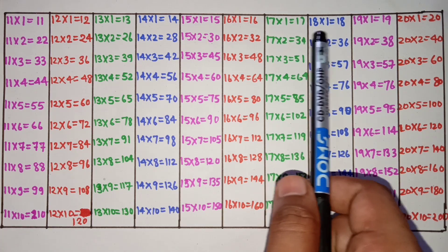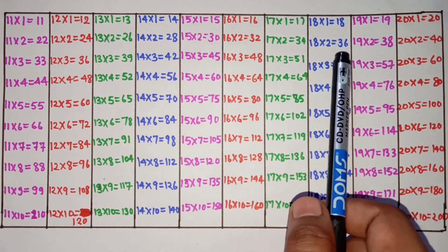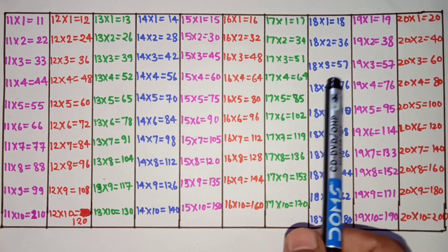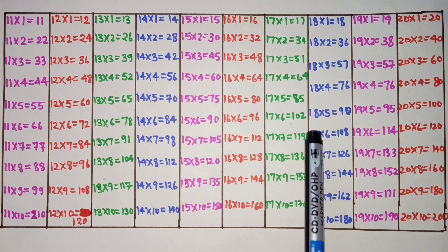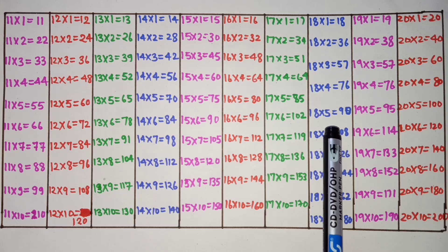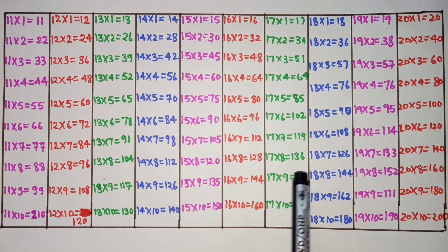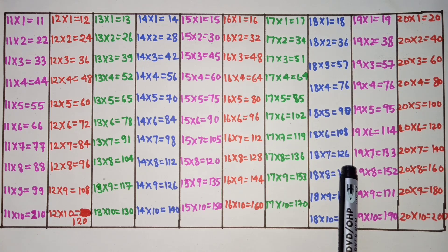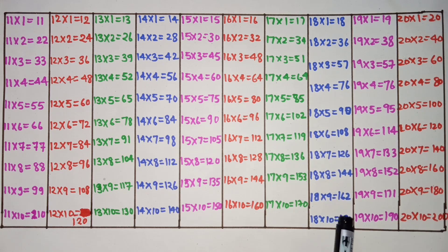18×1 is 18, 18×2 is 36, 18×3 is 54, 18×4 is 72, 18×5 is 90, 18×6 is 108, 18×7 is 126, 18×8 is 144, 18×9 is 162, 18×10 is 180.